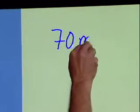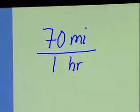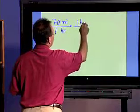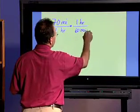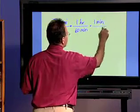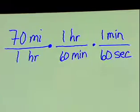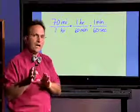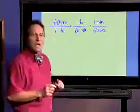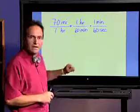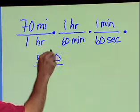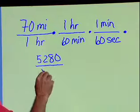So that would look like this. 70 miles per one hour. So the next thing we need to do would be to multiply this by the fact that in one hour there are 60 minutes. And then we need to multiply it by the fact that in one minute there are 60 seconds. So this is setting it up so that now we have it in miles per second. So we're not quite done, but at least we have the time into seconds. So the next thing we need to do would be to multiply this by the fact that there are 5,280 feet in one mile.